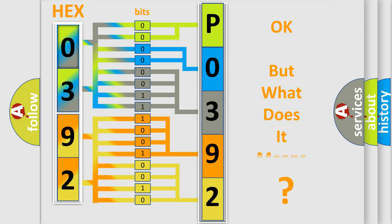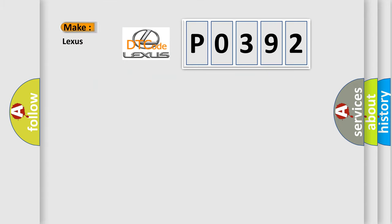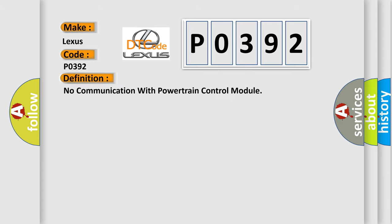The number itself does not make sense to us if we cannot assign information about what it actually expresses. So, what does the diagnostic trouble code P0392 interpret specifically for Lexus car manufacturers? The basic definition is No communication with powertrain control module.